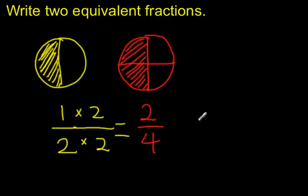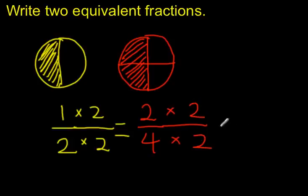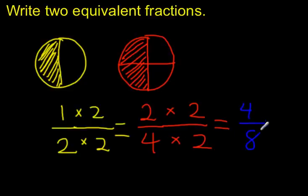And I could do this further. Maybe I want to have twice as many parts again, so I'll use multiplication — times 2 for the numerator and times 2 for the denominator. On my numerator, 2 times 2 is 4, and 4 times 2 is 8. So 4 eighths is also a fraction that's equivalent to 2 fourths, and it's equivalent to 1 half as well.